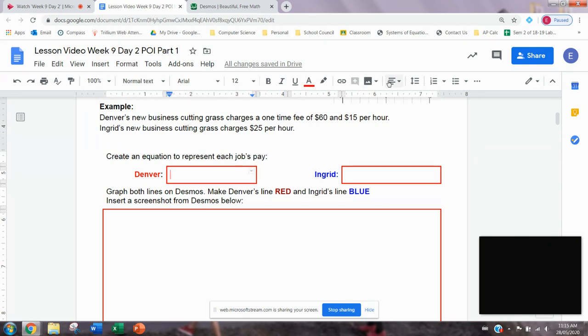So we need to make an equation to represent the pay from each job. In here, I'm going to put an equation for Denver. I'm going to call his equation P equals, because we're finding the pay. And his initial would be the $60. That's where it starts at, he starts charging $60. And then also charges $15 per hour. So I'll put plus because it's increasing, 15 times the number of hours. So Denver's pay would be $60 plus 15 times the number of hours that he mows your lawn.